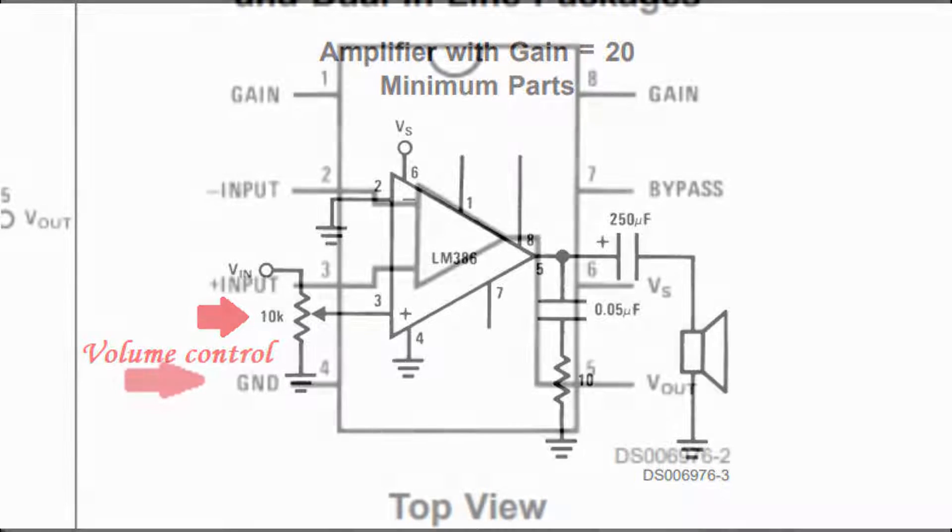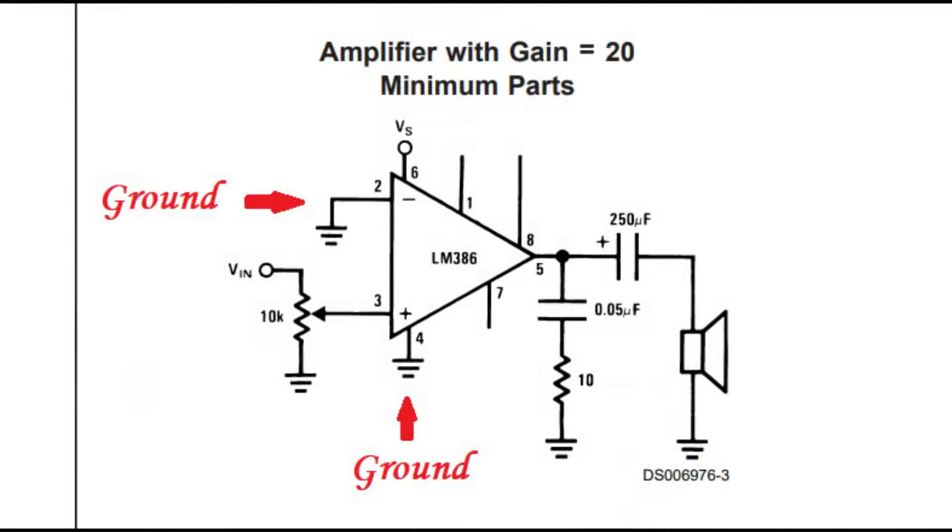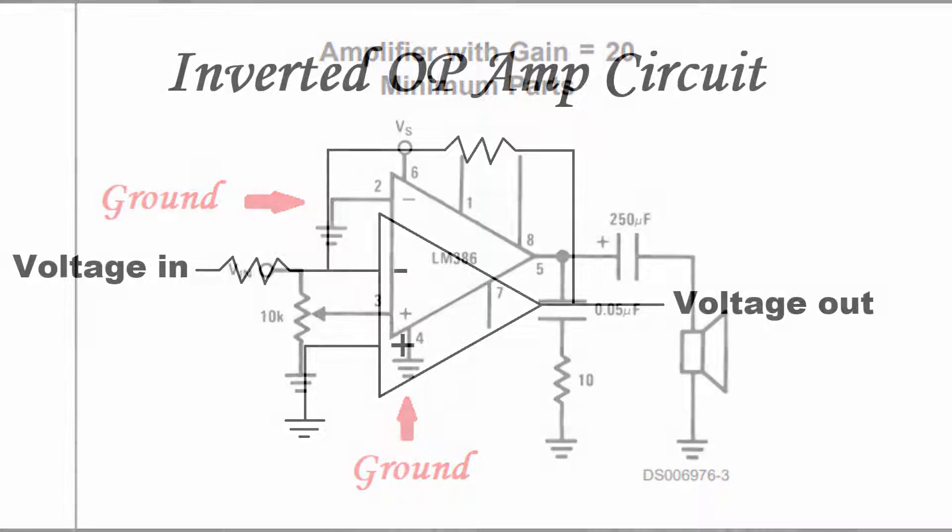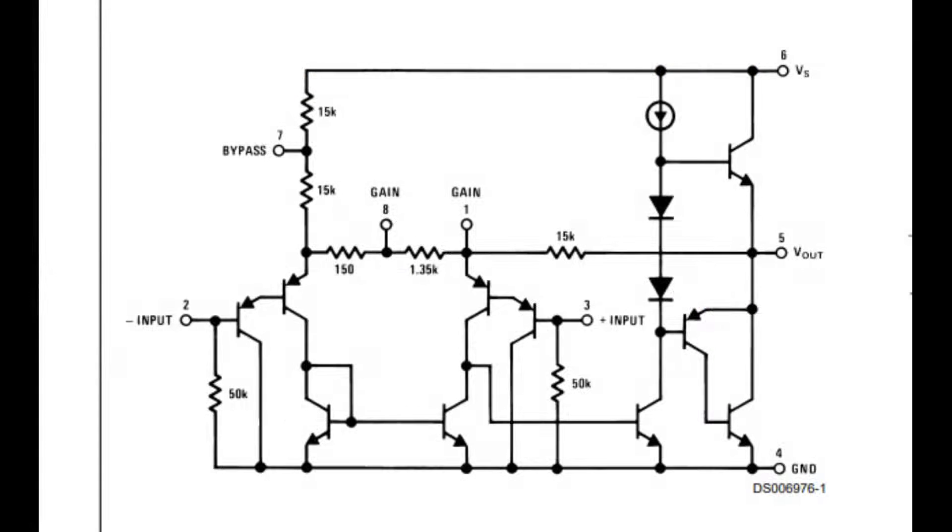Next we have pin number 4. This is another easy one. It's the ground. So why do we have two ground pins here? For some applications, you can wire an amplifier with an inverted input. And if you look back to the equivalent schematic of what's going on inside the LM386, you can see that the number 2 pin is indeed an input.